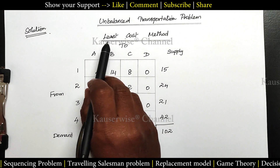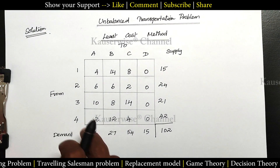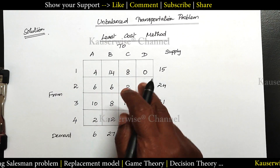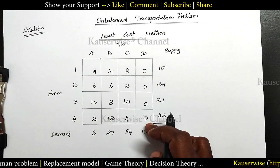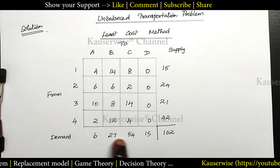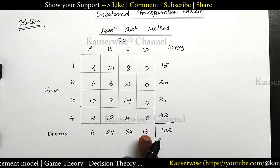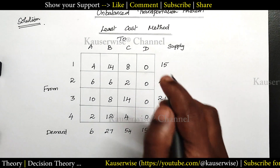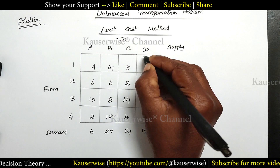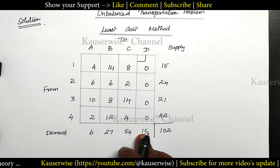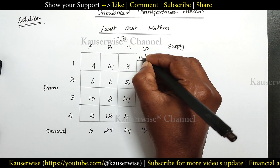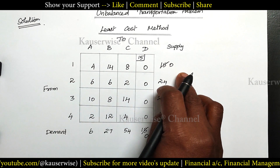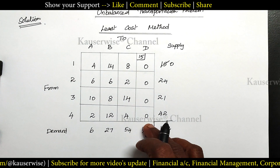Now we are going to solve this problem by using the least cost cell method. We need to select the least value in the cost matrix. The least value is 0 — we have 4 zeros, so we select any one. The demand here is maximum at 15. So I am going to allocate 15 — supply is also 15 — exhausting the entire supply and demand by selecting this cell. Allocate 15 here; both become 0, so this row and column will get cancelled.